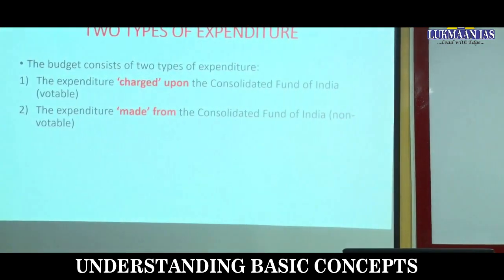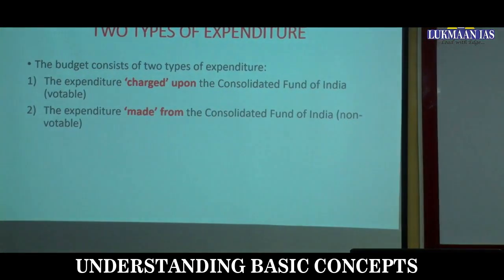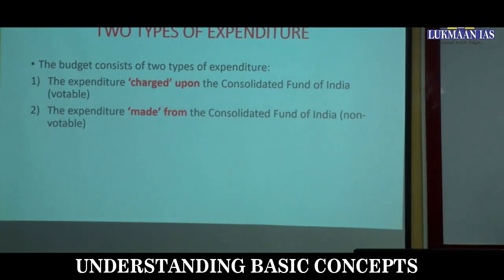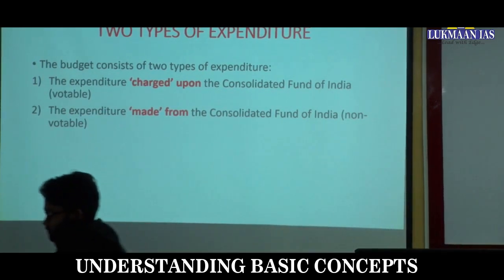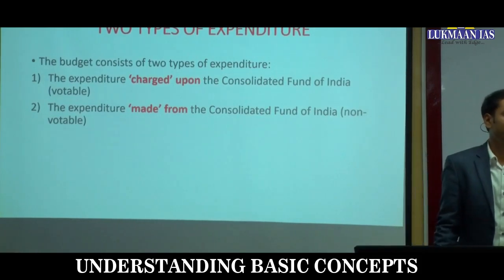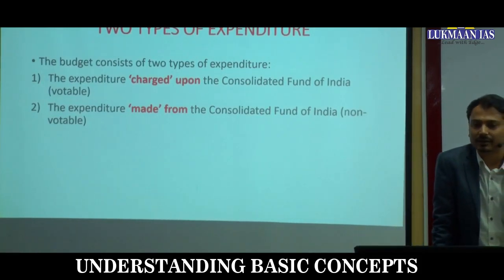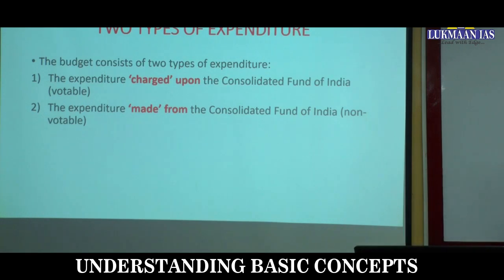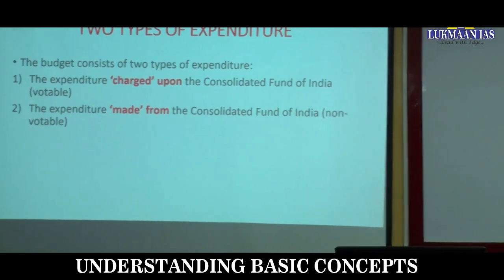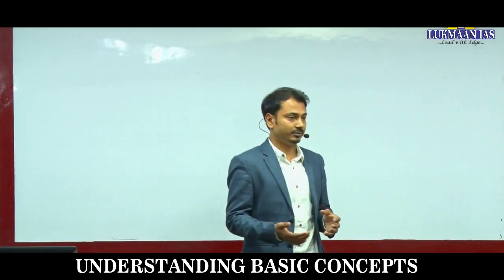Two important concepts: expenditure 'charged upon' and expenditure 'made from' the Consolidated Fund of India. Expenditure charged upon the Consolidated Fund of India includes salaries of the President, judges of the Supreme Court and High Courts, their pensions and allowances. All these are included under 'charged upon.' These expenditures are non-votable in Parliament — they are the non-votable part of your budget.